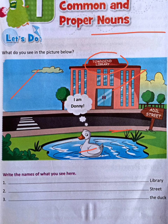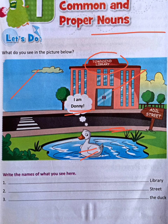Library is a common noun, but when we know the name of the library — it is Townshend Library — so this name is a proper noun. Then we see here: Duck is a common noun. But because we know the name of the duck — Donny — that is a proper noun. Street is a common noun, but because we know the name of this street — Adel Street — that is a proper noun.